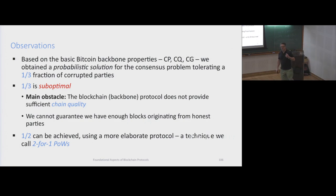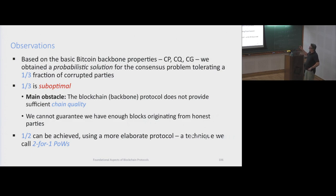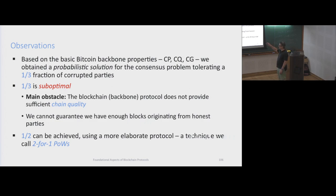One issue is that we saw that less than one-half corruptions would be optimal. Here we achieve one-third only. Remember, chain quality property was very weak - the adversary has more power and is able to insert more stuff. That's the intuitive reason why we get less than optimal. Then we show another protocol that achieves one-half - the optimal bound - with a cute trick called two-for-one proofs-of-work.